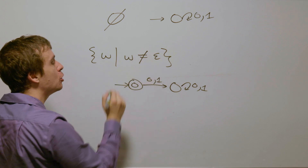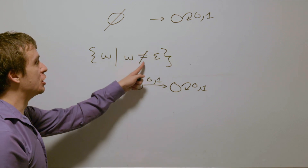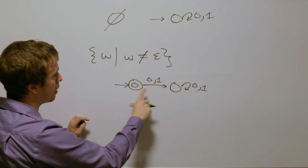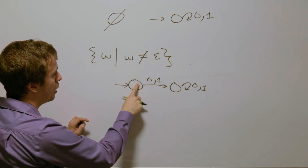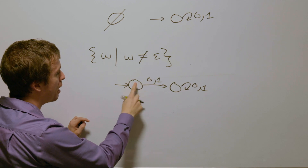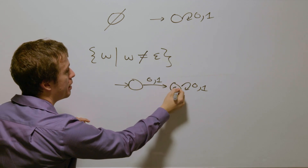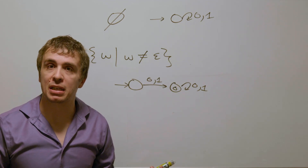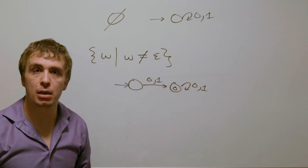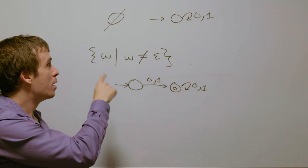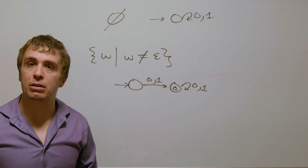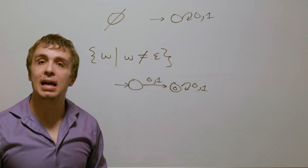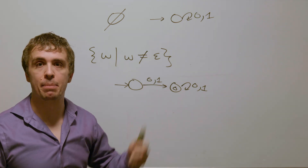Now if we want the original language — which is not the empty string — we flip final and non-final states. So I'm going to make the start state non-final and the dead state final. Therefore, this is a deterministic finite automaton for the set of binary strings that are not the empty string, as well as the empty set DFA shown earlier.